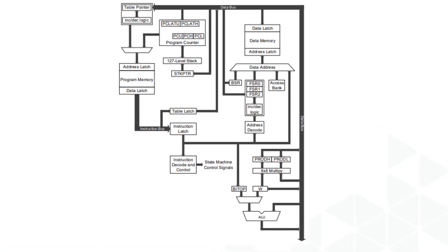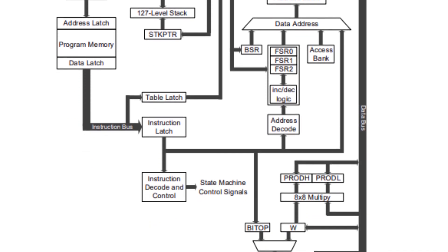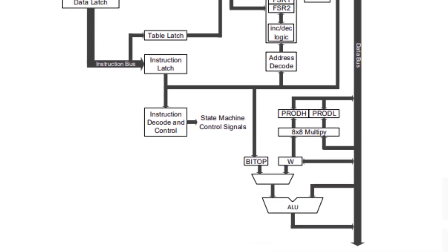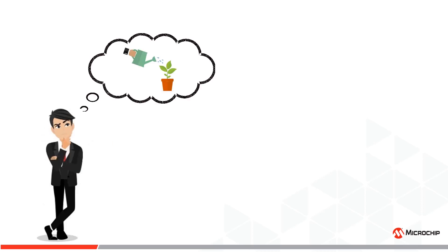Rather than getting into the granular details of computer architecture and the memory pipeline, I'd rather start with a story about Harry. Harry is a scholar, and as any scholar he loves to spend time in his study amongst his books and papers doing research. But Harry's chores are constantly getting in the way of his work, whether it be watering his plants when they are dry, going grocery shopping when he runs out of milk, or fetching his mail from the post office.